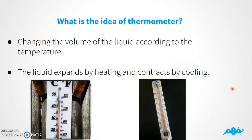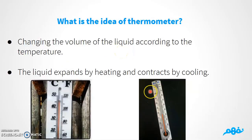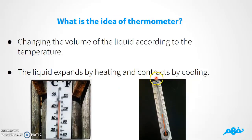So what is the idea behind the thermometer? Basically, it works by changing the volume of the liquid according to the temperature. There is a liquid inside the thermometer, and this liquid changes its volume — going up and down — according to the temperature. The liquid expands by heating and contracts by cooling.